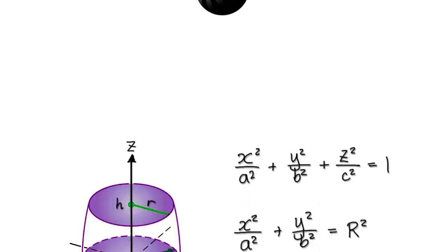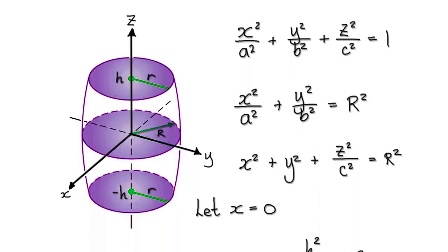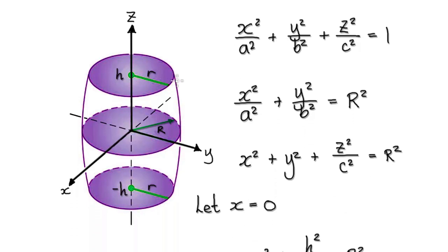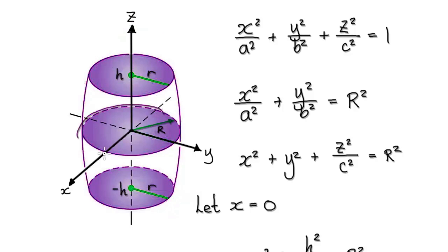In this video, we're going to come up with a formula for the volume of this barrel. This barrel is really part of an ellipsoid where you cut it at a height of h, and then you cut it at a height of negative h. The radius of the top and bottom circle is capital R, and the radius of the middle circle is small r.